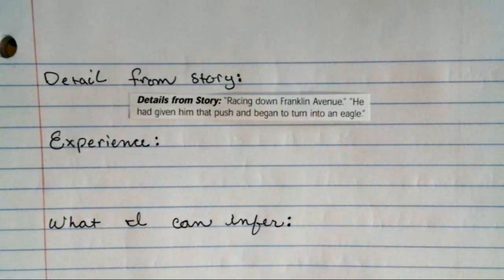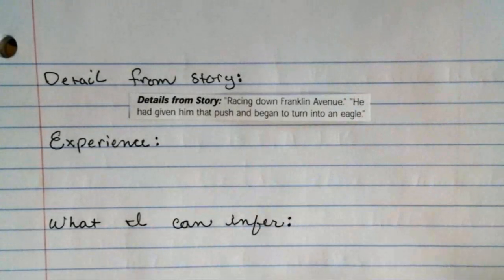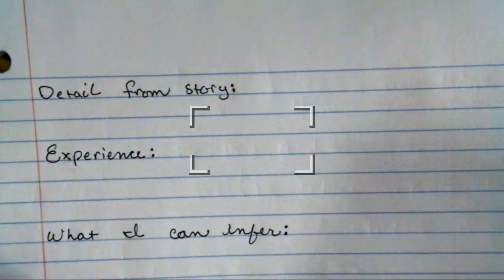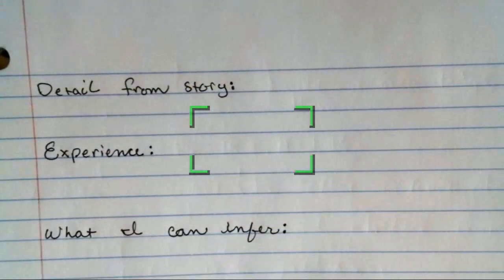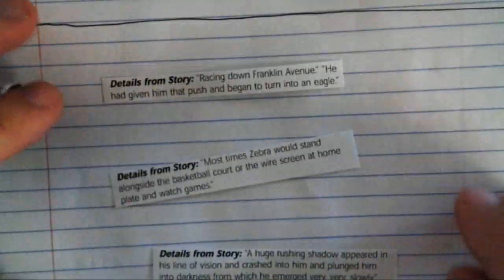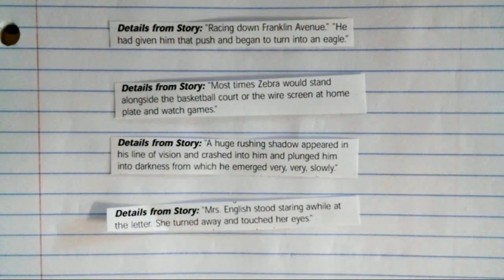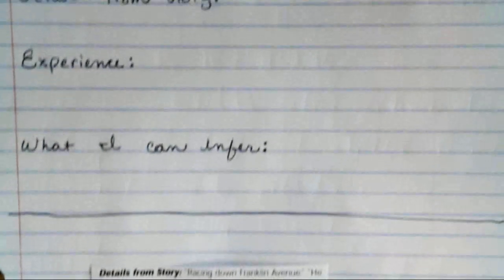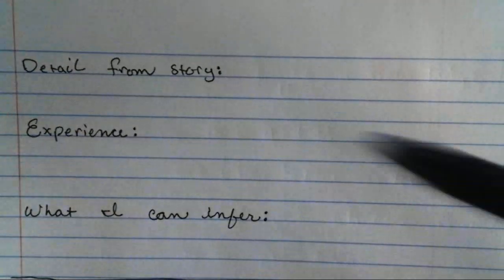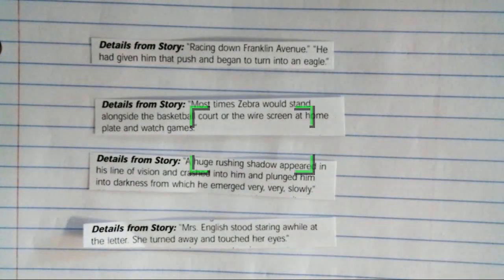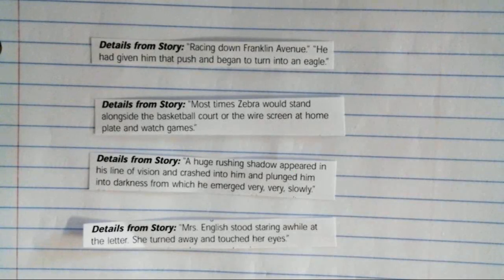Those are the four things you need to do. For each one you need to do all three parts. Each one takes about half a sheet, so half a sheet here, the bottom is a half sheet, turn it over — half sheet, half sheet — so you have a total of four. These are in no particular order; they happen throughout the entire story. You will plug each separate detail from the story in, and fill out your experience and what you can infer for all four.